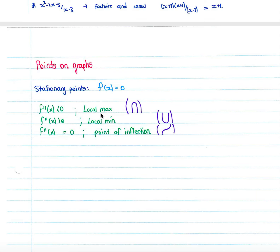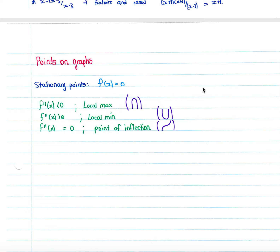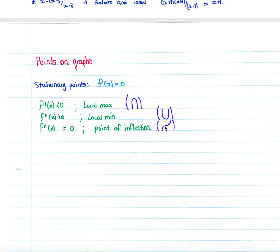They may ask more complicated questions, such as whether a turning point is a maximum or minimum, or to find the point of inflection. For this, you use the second derivative, which is simply the derivative of your first derivative, applying the same rules as above. If you have a local maximum, your f''(x) will be less than zero. If you have a local minimum, your f''(x) will be greater than zero. If you have a point of inflection, your f''(x) equals zero.